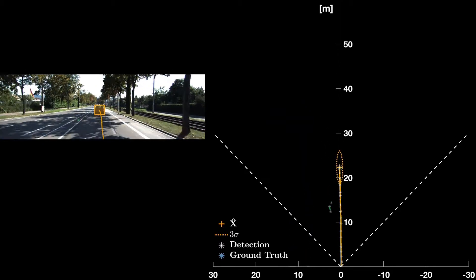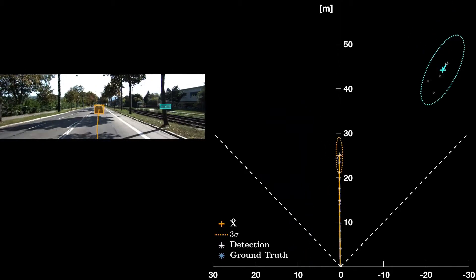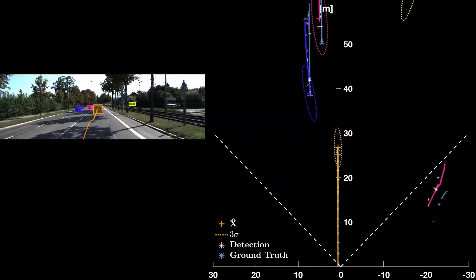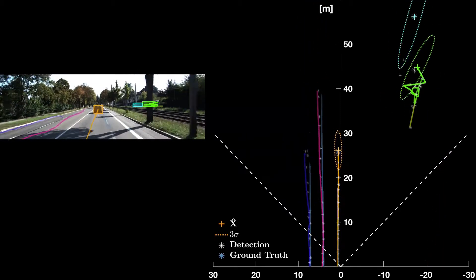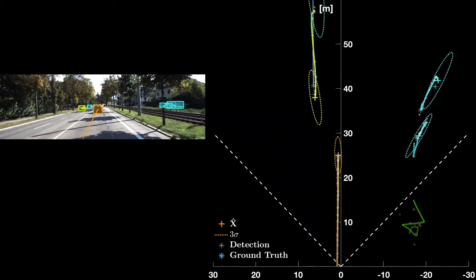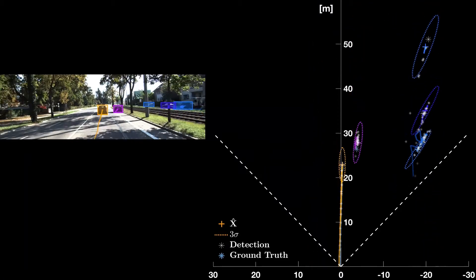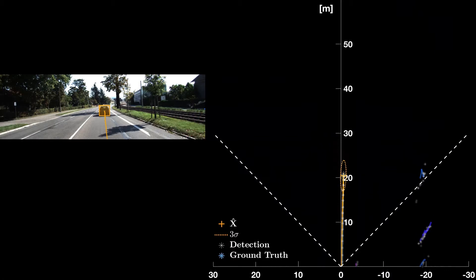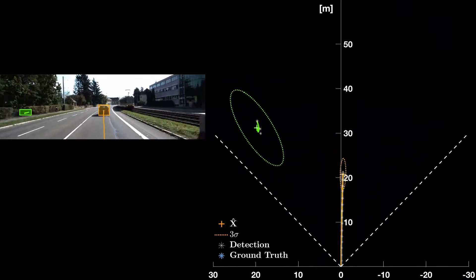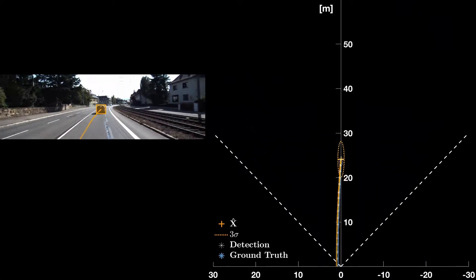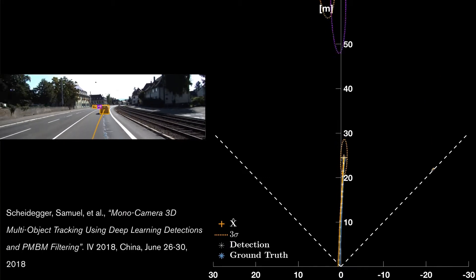What we see here is that our filter manages to filter the noisy detections from the camera, and over time gets more and more certain about the position of the vehicles. Pretty nice, right?